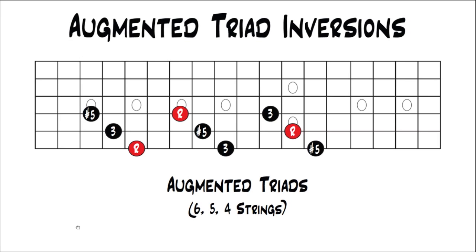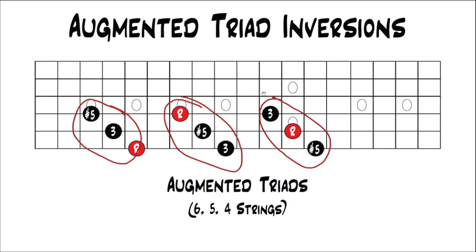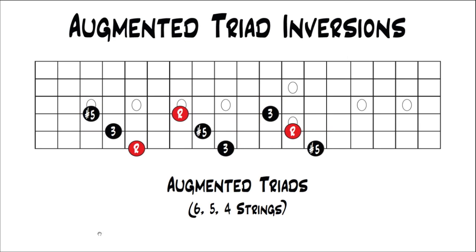These are all the inversions: root position, first inversion, second inversion. They all look the same — you've just moved up in major third intervals because all the intervals in an augmented chord are a major third apart. Just like all the other inversions, root always goes to 3, 3 always goes to 5, and 5 always goes to root, because those are the next closest intervals.